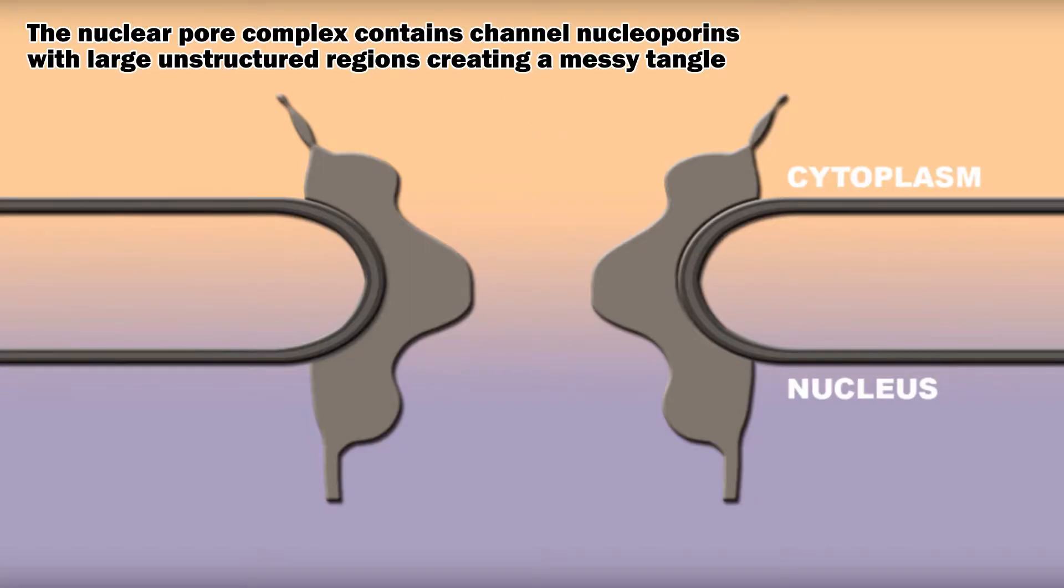The nuclear pore complex contains channel nucleoporins with large unstructured regions creating a messy tangle. This is why macromolecules can't freely come and go, but small molecules can.